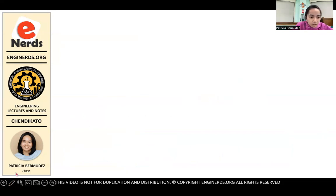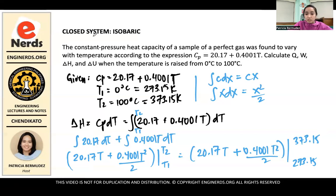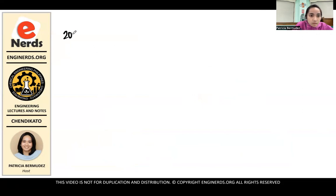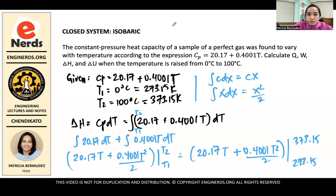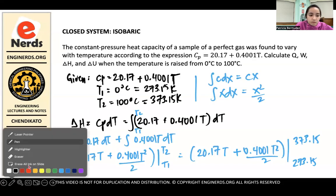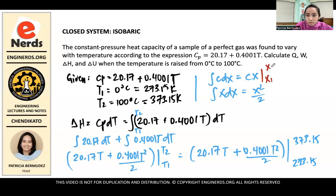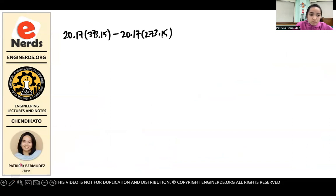So it will be equal to 20.17T plus 0.4001 T squared over 2 bound from 273.15 to 373.15. So now let's calculate the integral. So we'll substitute these two values here. So what will happen is 20.17 times, and you'll start with T2, which is 373.15 minus 20.17 times 273.15. Because those are the rules of calculus, that if this one is bound from X1 to X2, it will be CX2 minus CX1.